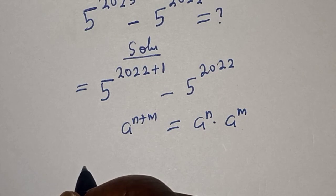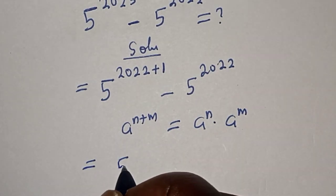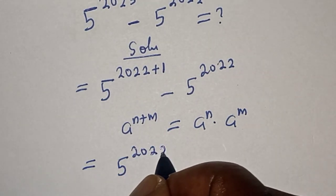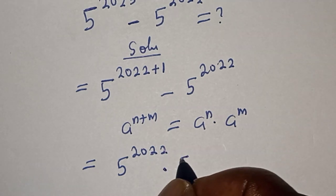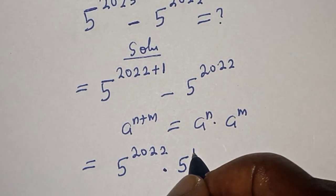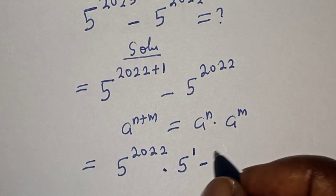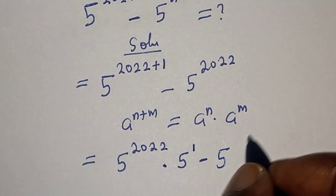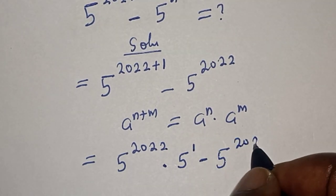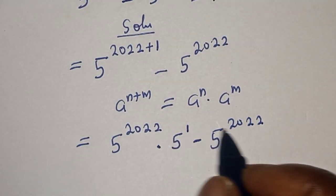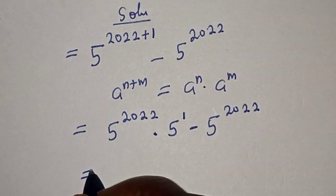So this is equal to 5 raised to power 2022 multiplied by 5 raised to power 1, minus 5 raised to power 2022. Then 5 raised to power 2022 is common, let's factor it out. We have 5 raised to power 2022...